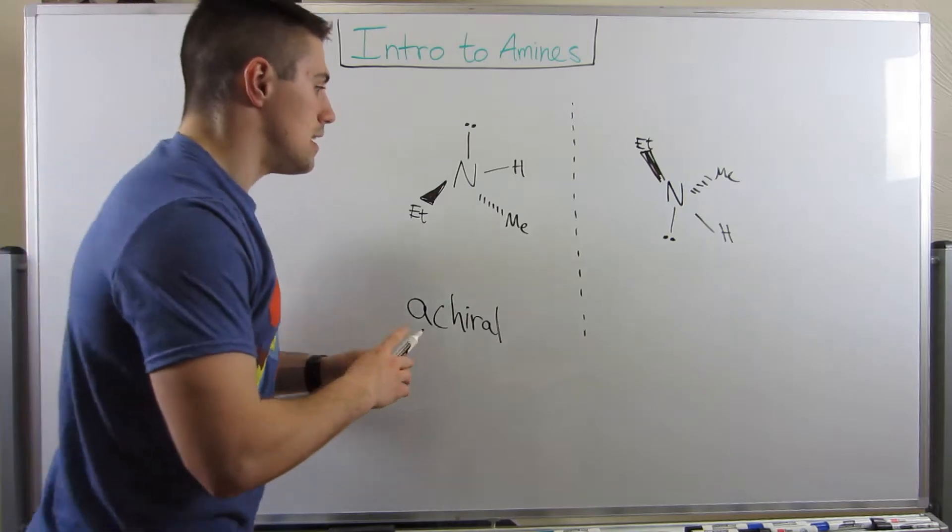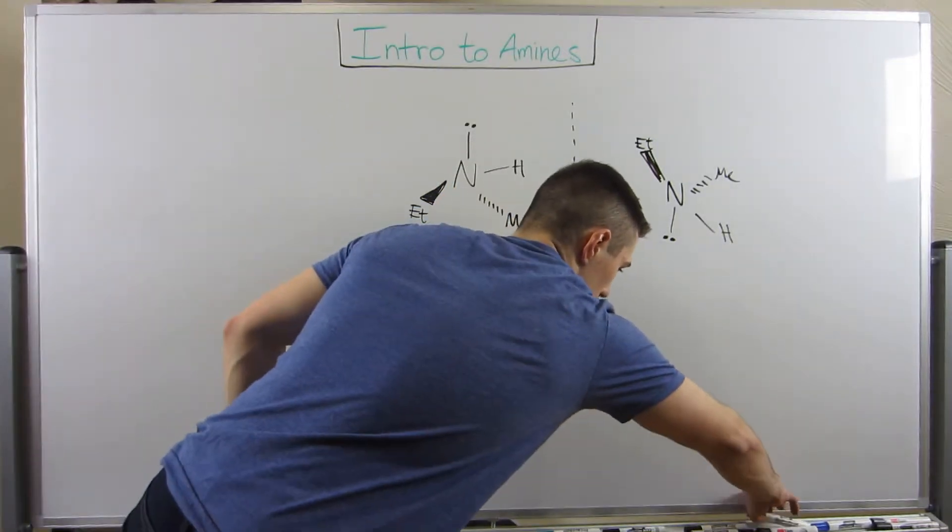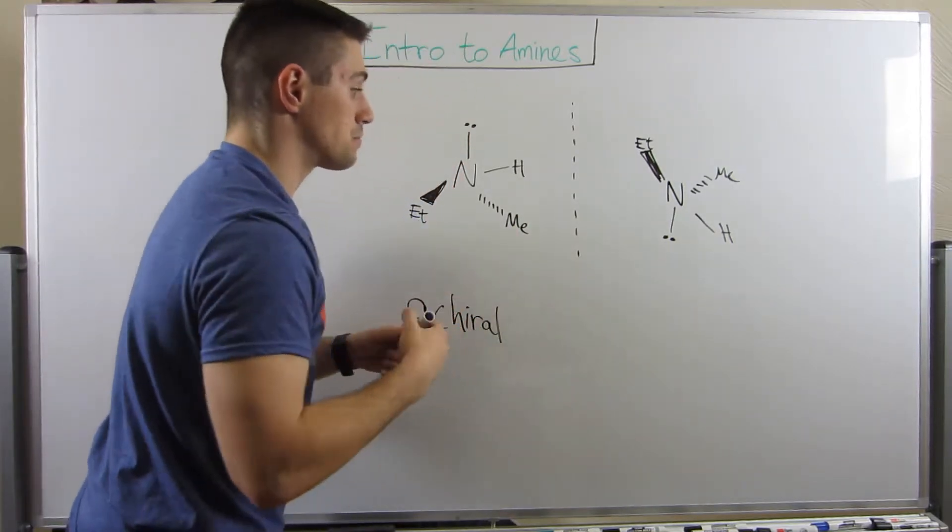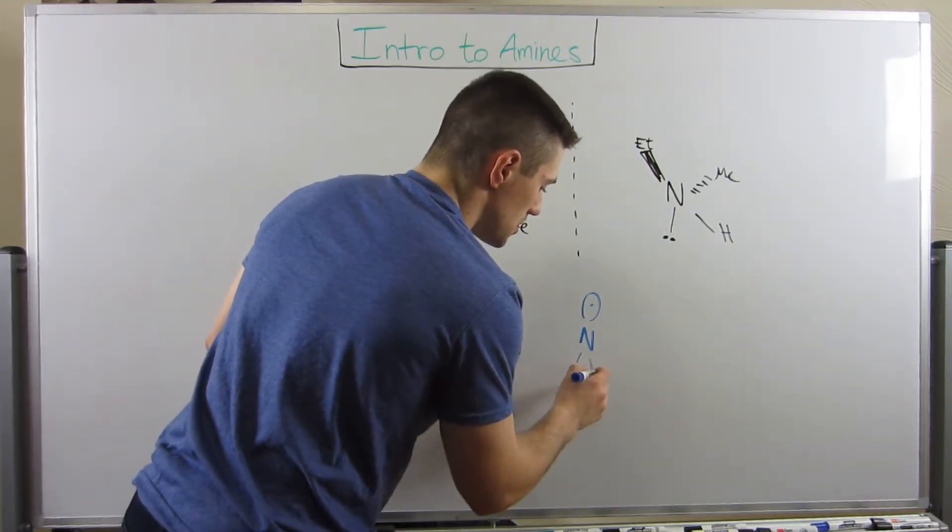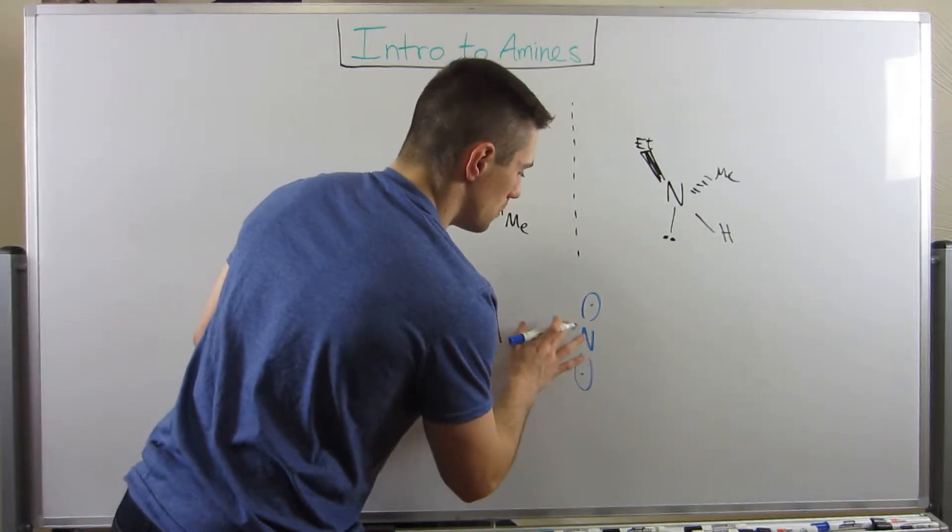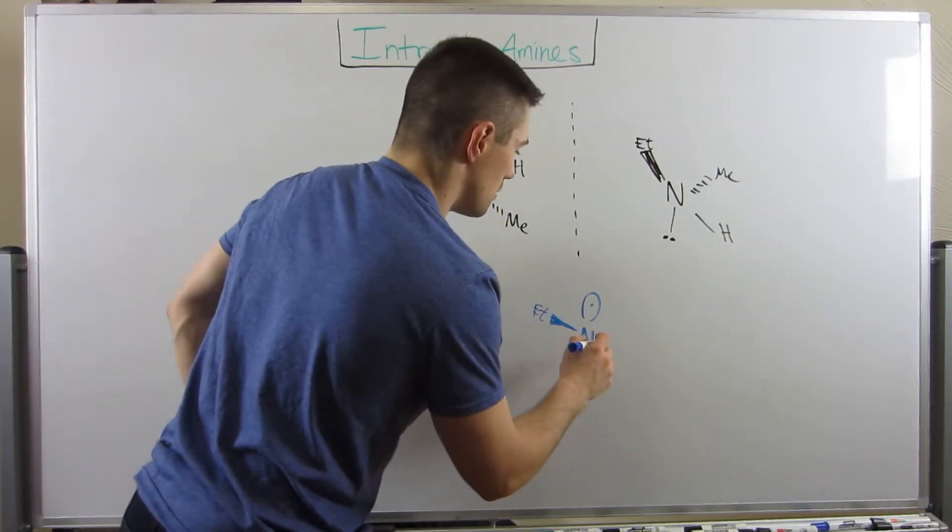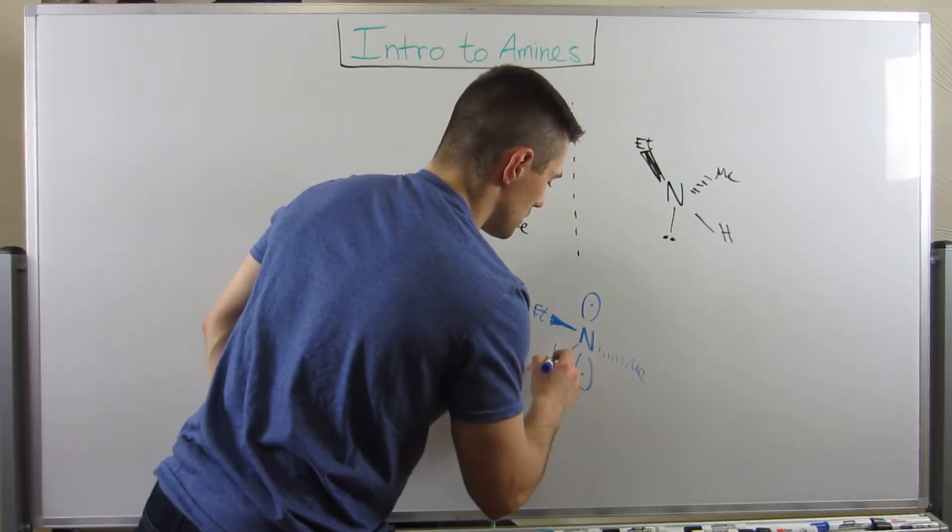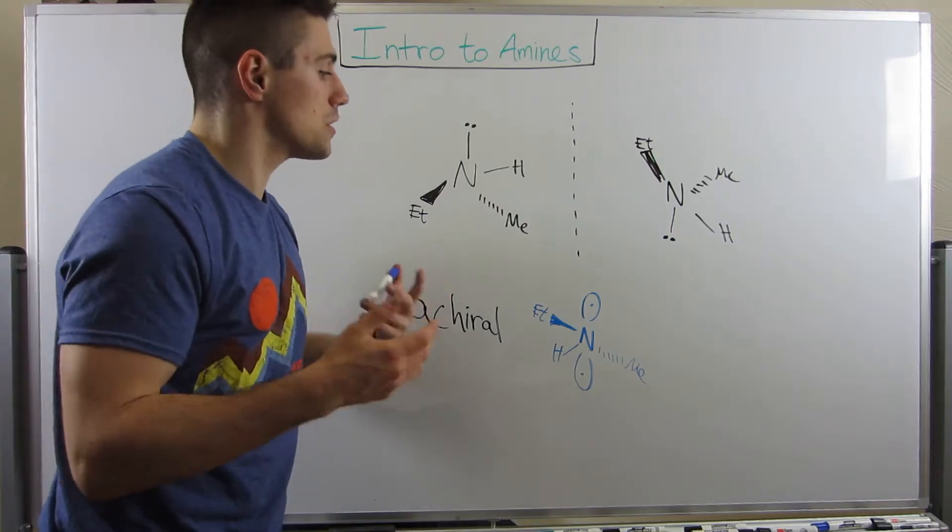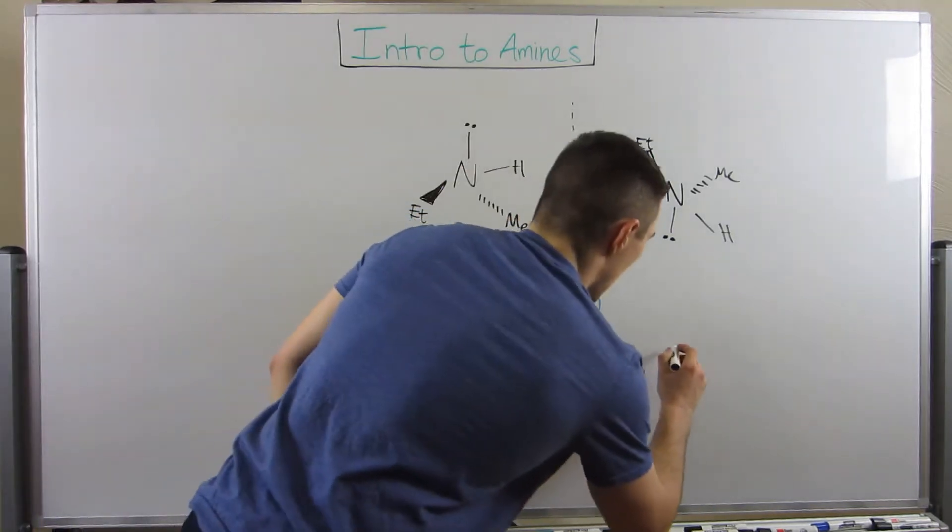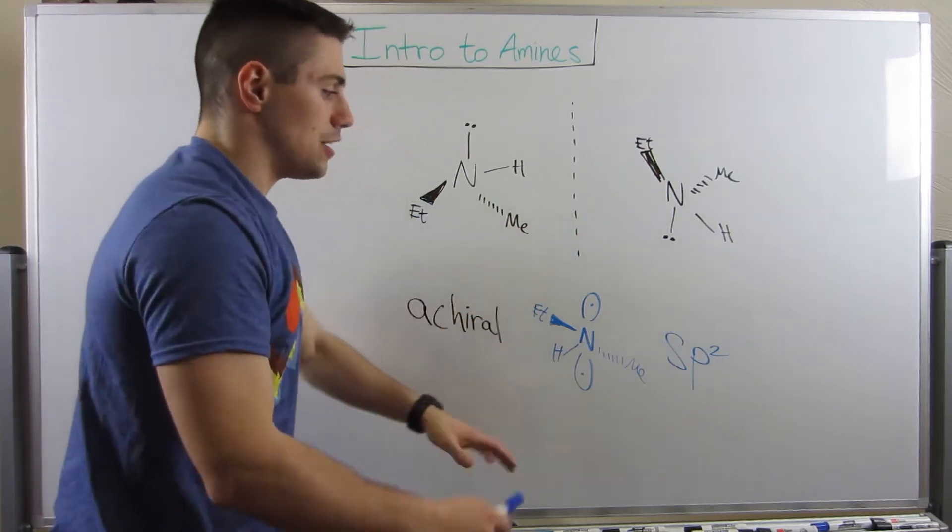There's almost like this toggling back and forth. And here's the key. In the middle of the toggling, during this transition state, what you have is a transition state where everything - your amine is actually SP2 hybridized. In the middle of your lone pair going from on top to on bottom, you have this transition state, and during this transition state, you are SP2 hybridized. You're actually flat.